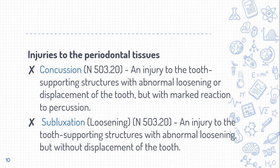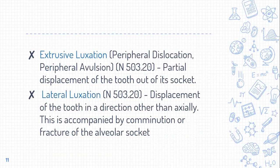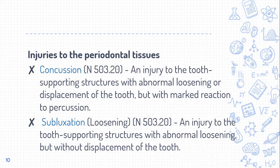The next category is injuries to the periodontal tissue — the soft tissue. This is an important section where you should identify the differences between concussion, subluxation, extrusive luxation, lateral luxation, intrusive luxation, and avulsion. Concussion is an injury to the tooth supporting structures without abnormal loosening or displacement of the tooth, but with a marked reaction to percussion — the patient reports sensitivity or pain.